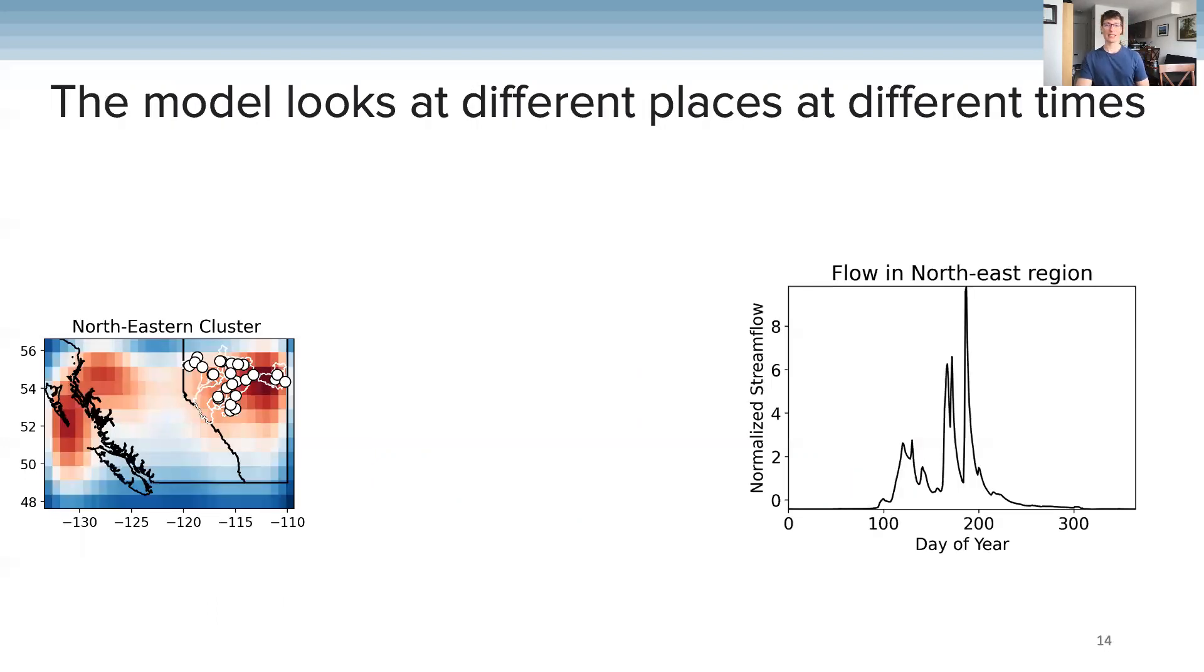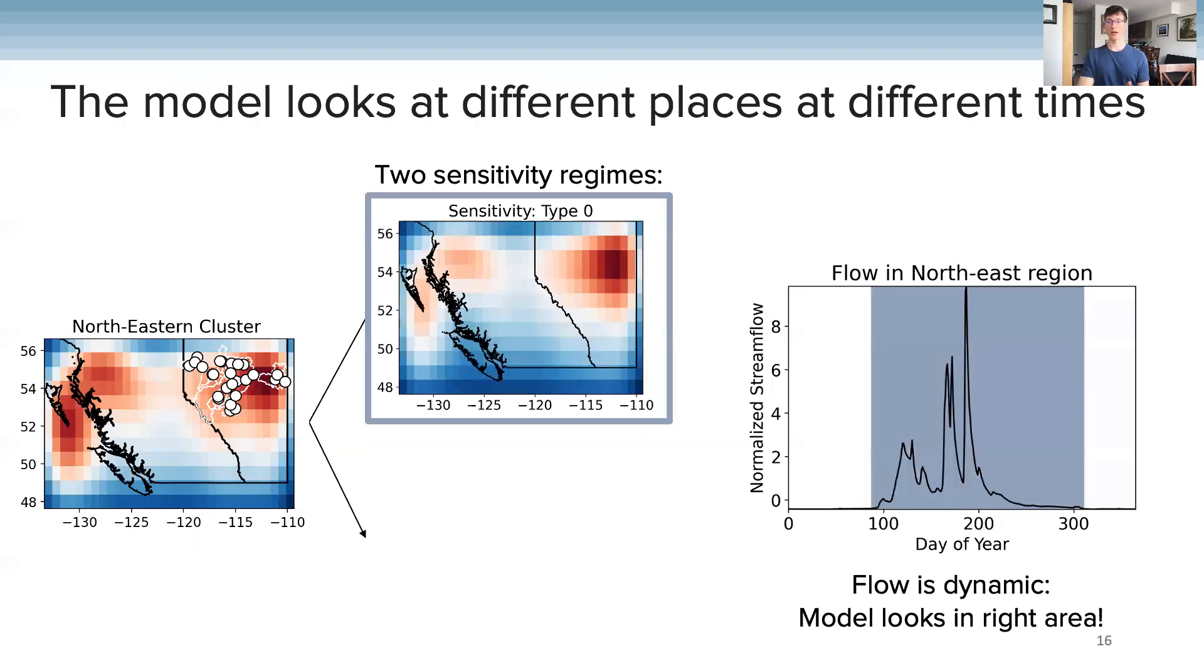What we find is that the model is looking at different places at different times. There turn out to be these two different sensitivity regimes. First, the model is looking in the northeast, and this is happening during times of dynamic streamflow. When river flows are changing day to day, the model is watching the areas nearby the stations.